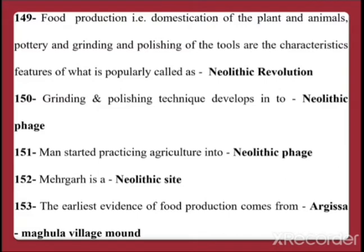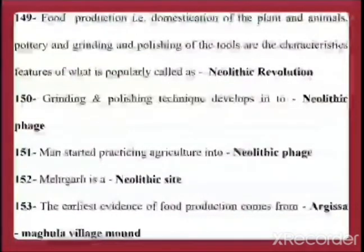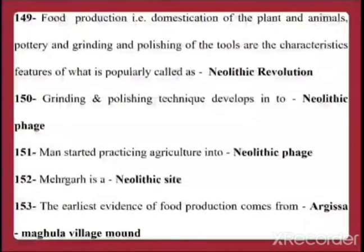Question 151: Man started practicing agriculture in the Neolithic phase. Question 152: Mehrgarh is a Neolithic site located in the Kachi plains near Pakistan, from where around 32,000 artifacts have been found — making it a very important site. Question 153: The earliest evidence of food production comes from Argissa Magula village mound.